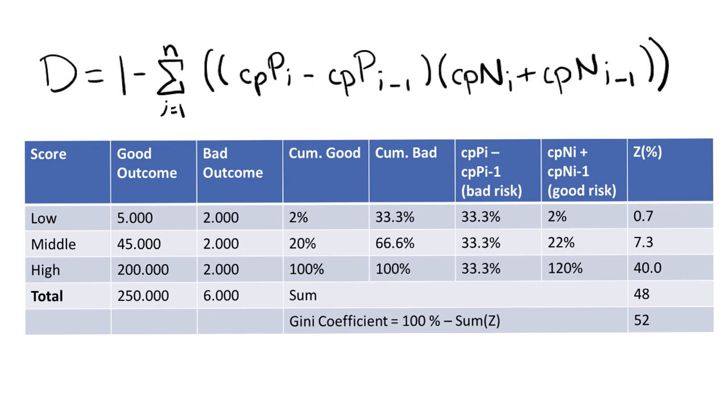Let's first take a look at the good outcome column. In the first row, there's a value of 5,000 for a score of low. This means that among the customers who had a good outcome, there are 5,000 who had a low credit score. Then we divide 5,000 by the total number of customers, which is 250,000. And 5,000 divided by 250,000 is 0.02 or 2%. We then place this 2% in the cumulative good column.